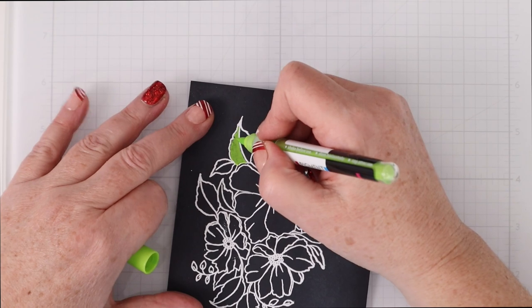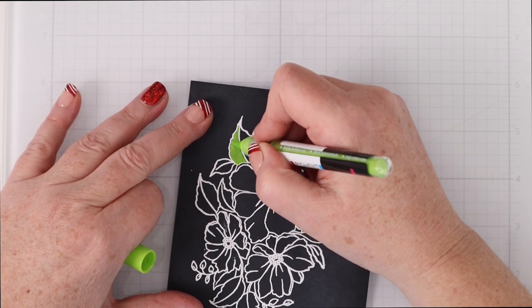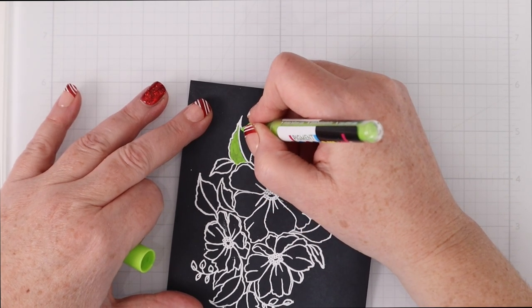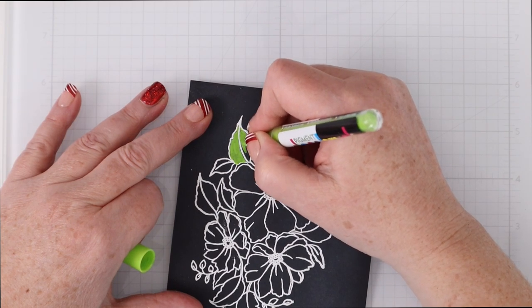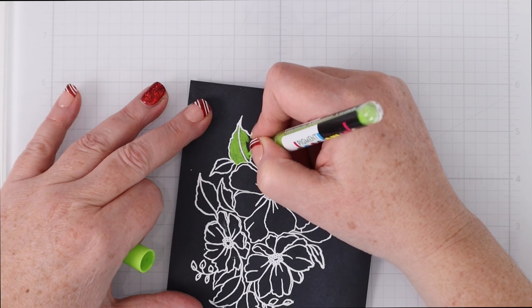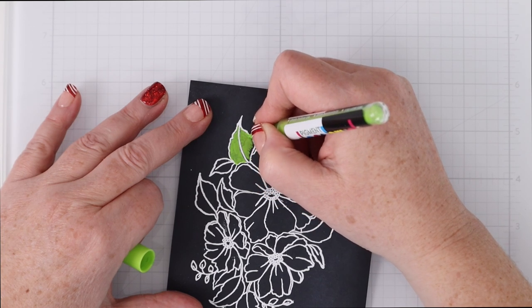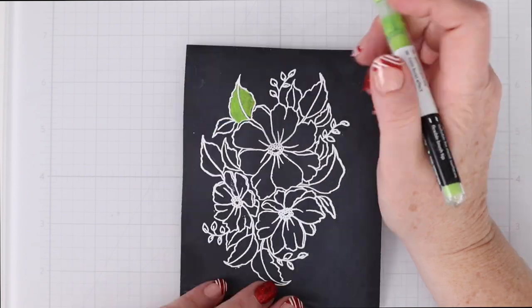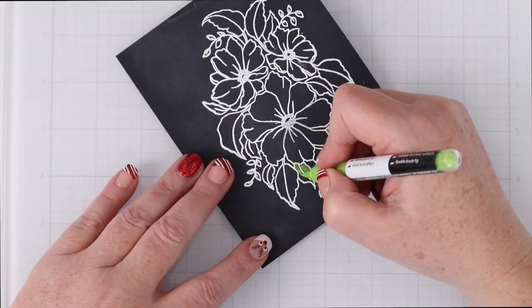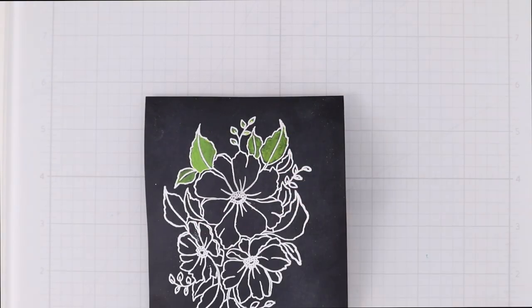When I swatched these on the black cardstock I was a little worried that they were a little thin and watery and so they were showing through the black cardstock quite a bit. But when you take your time to just carefully color in the image and not go back and forth over anything too much but just make sure that you're coloring it all in you do get a nice pop of opaque color on top of that black cardstock.